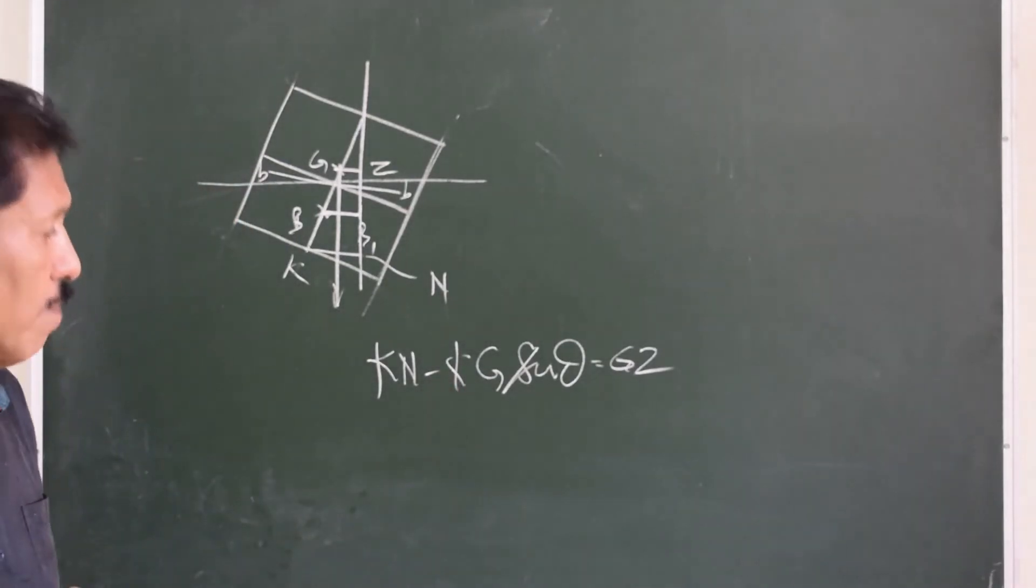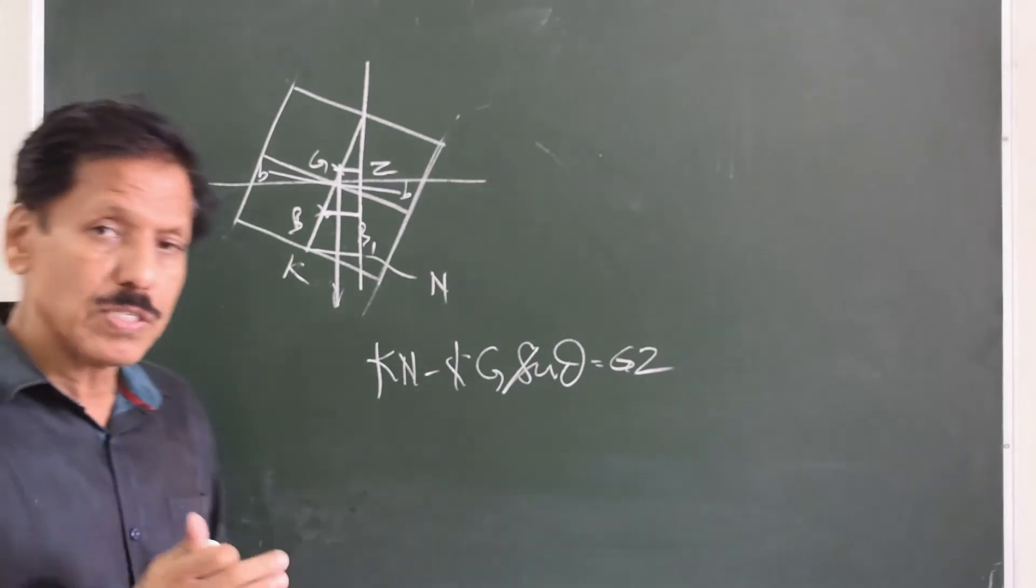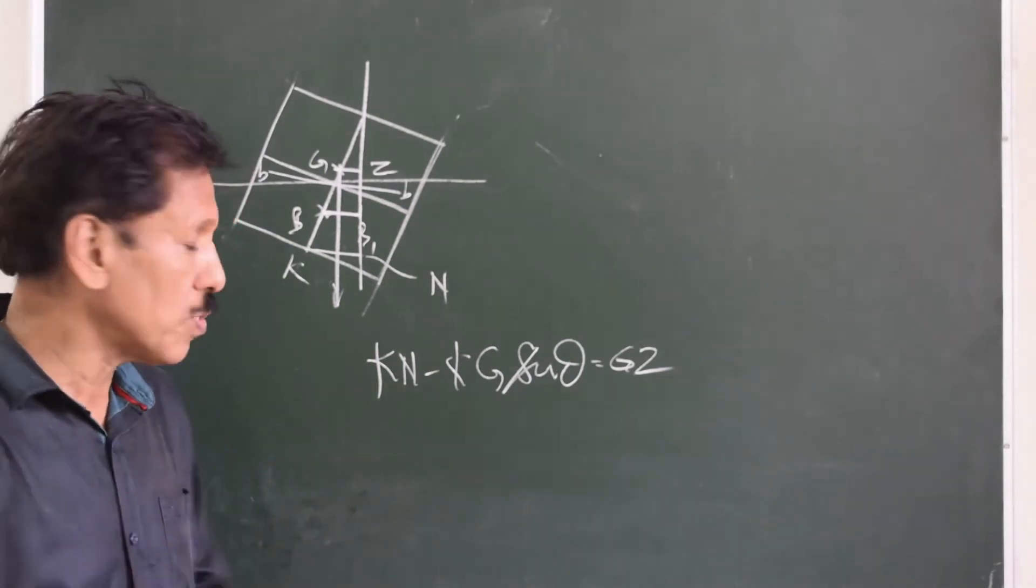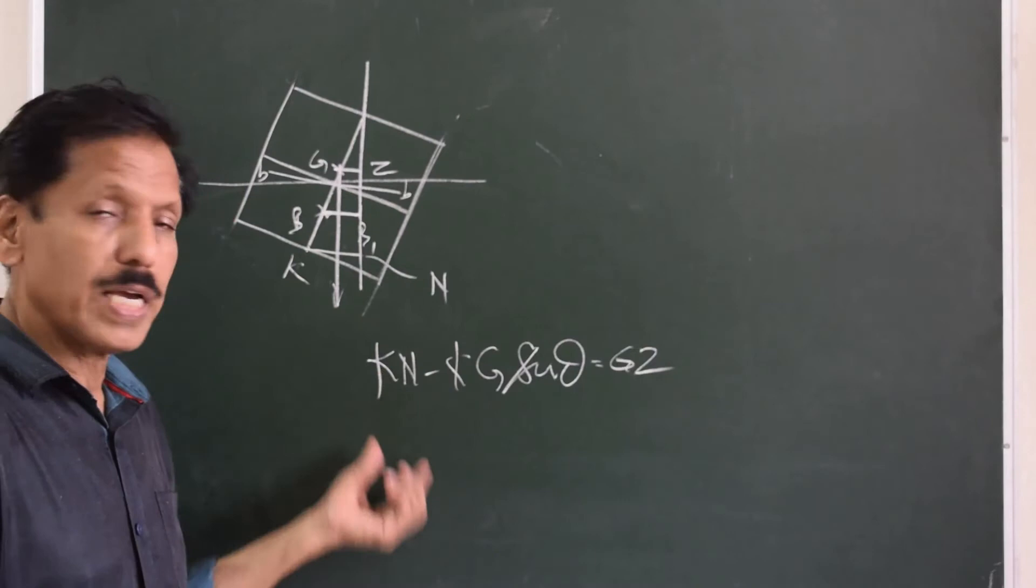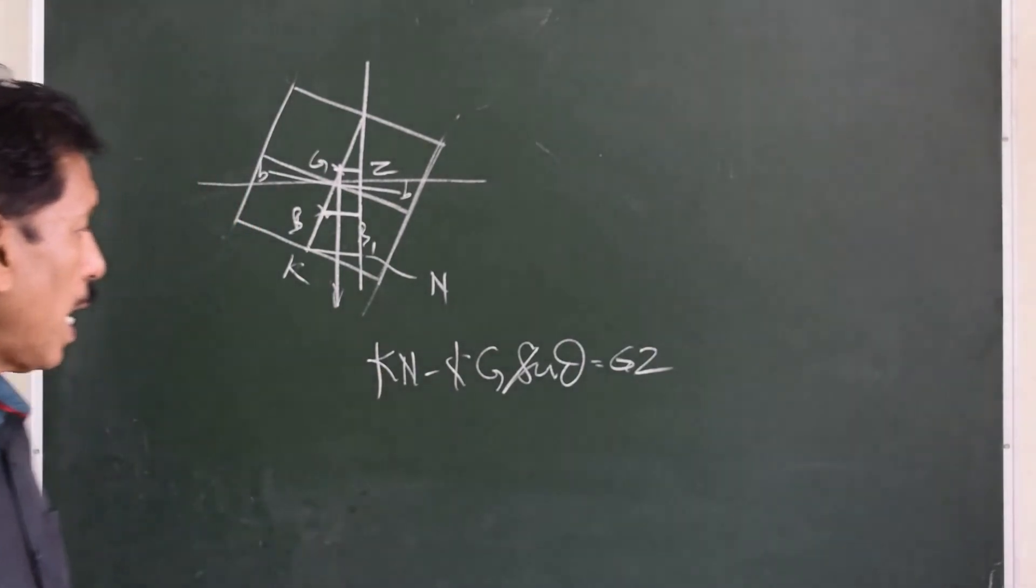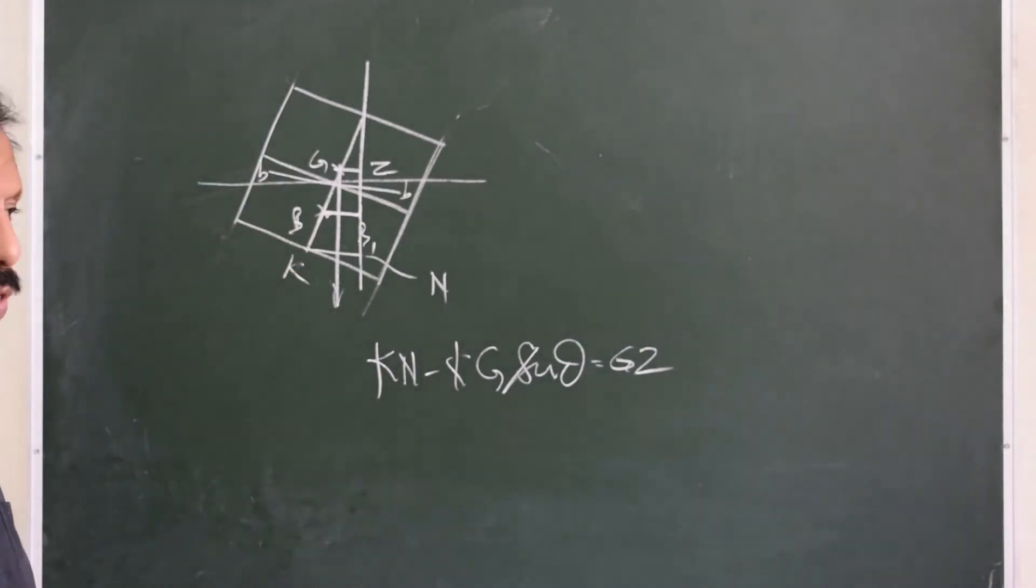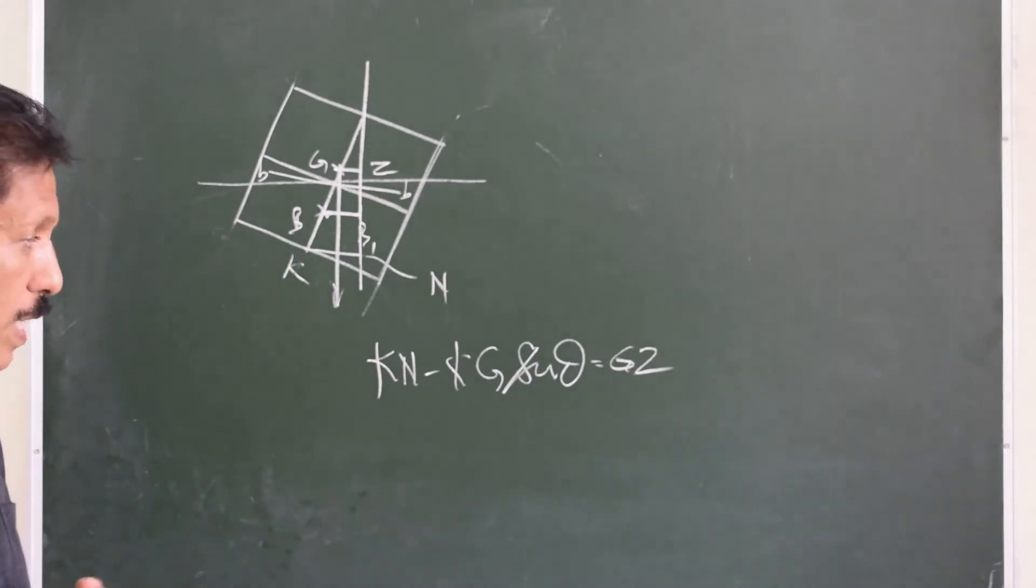Now, if you look at this formula carefully you will appreciate that for a given draft suppose the ship is floating in salt water, for a given draft we have the KN data available and then depending on what is the KG of the ship the GZ will vary. So GZ does depend on the KG.